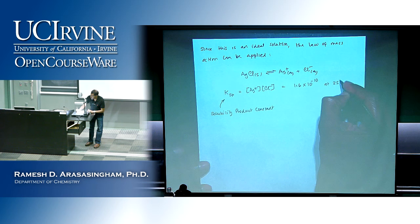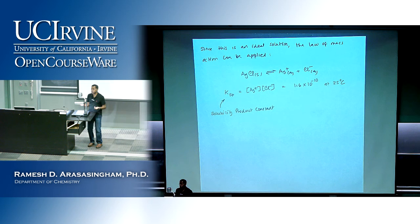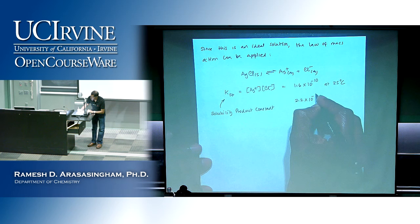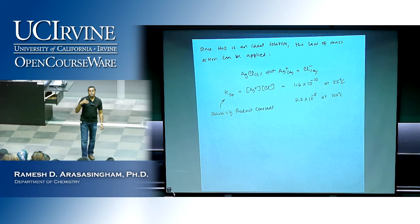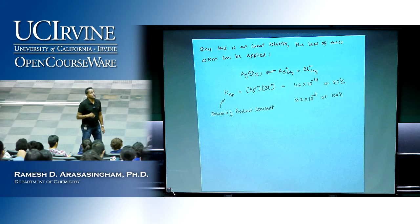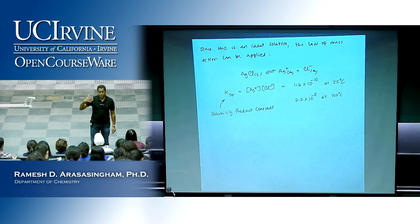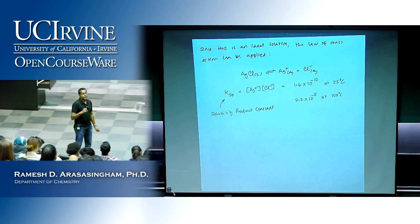Remember, the equilibrium constant always depends on temperature. So if you change the temperature, the value changes. If I raise the temperature to 100°C, the Ksp for AgCl becomes 2.2 × 10⁻⁸. Does Ksp increase or decrease as you raise the temperature? It increases — because Ksp tells you the solubility. As you raise the temperature, solubility increases, meaning more dissolves. We know that if you want to dissolve a substance and increase solubility, you heat it up, and you can see that when you increase temperature, Ksp goes up.